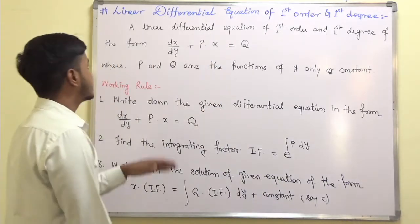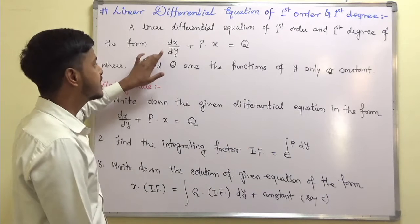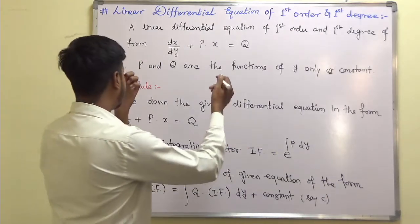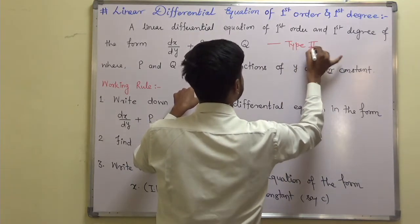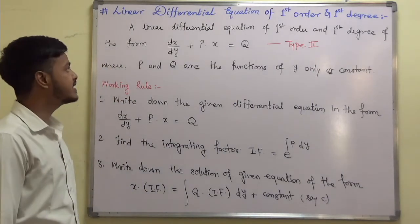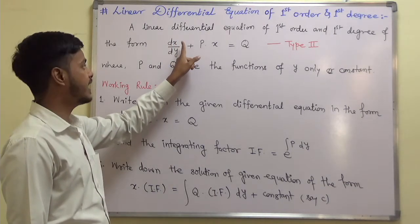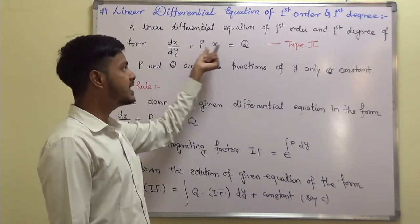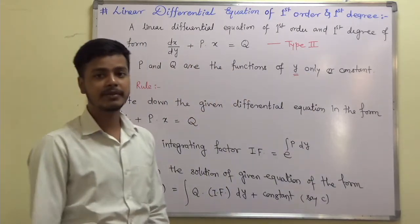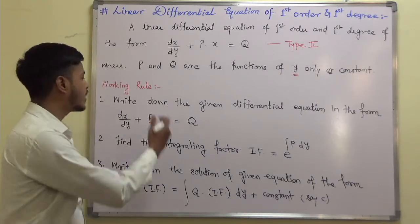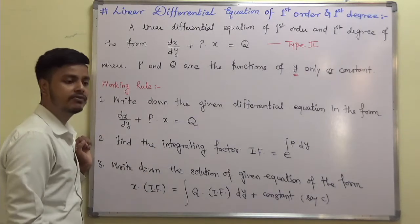This linear differential equation of first order and first degree, of a specific form, is called the linear differential equation of type 2. The key change is: in place of x we have y, and in place of y we have x. Also, P and Q here are functions of y alone — or sometimes a constant. The working rule is exactly similar to type 1; only the manner of writing is different.